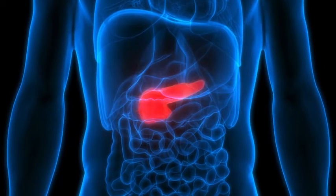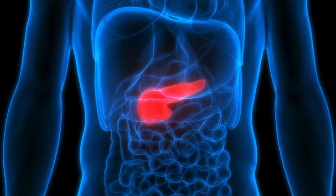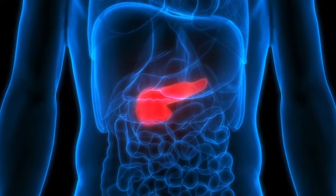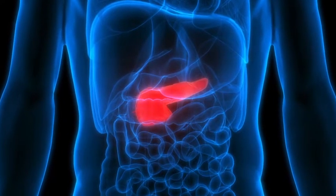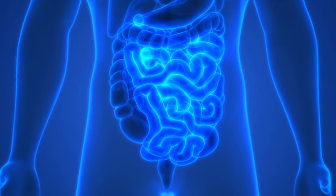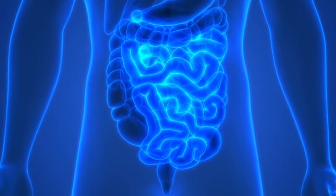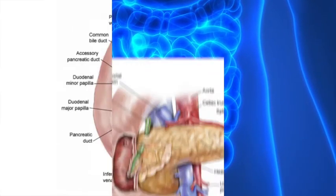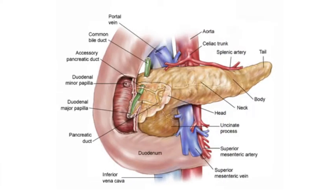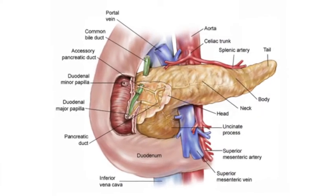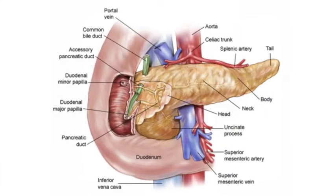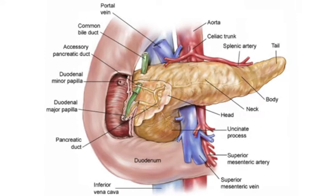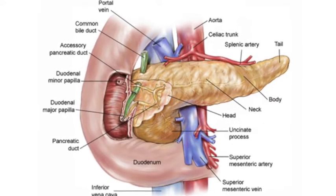The pancreas is a gland located deep within the abdomen between the stomach and the spine. It is part of the body's digestive system and endocrine system. Pancreatic cancer forms when healthy cells in the pancreas stop working correctly and grow out of control, forming a mass. There are several different types of pancreatic cancer.